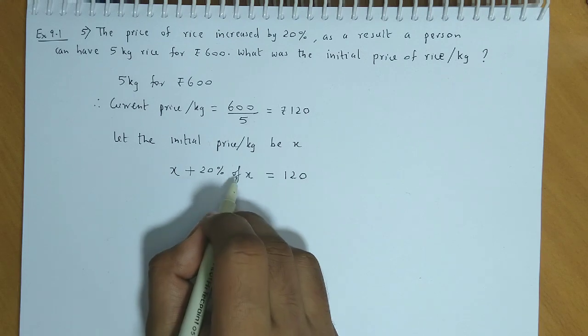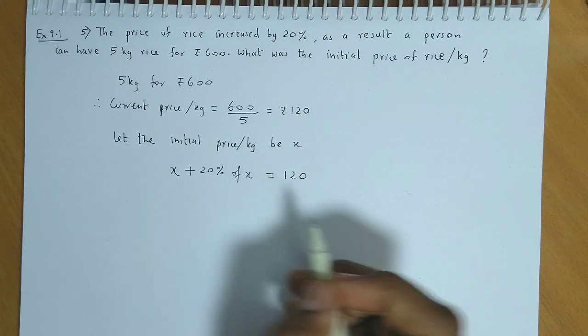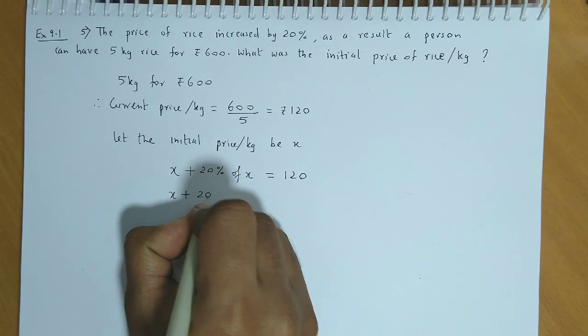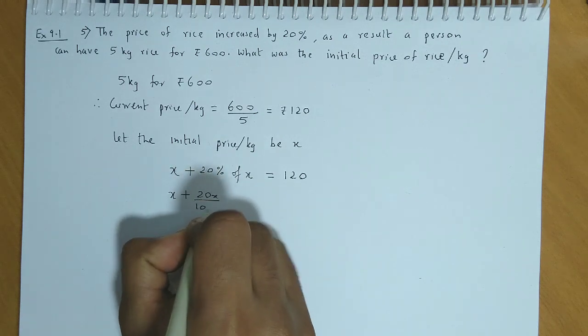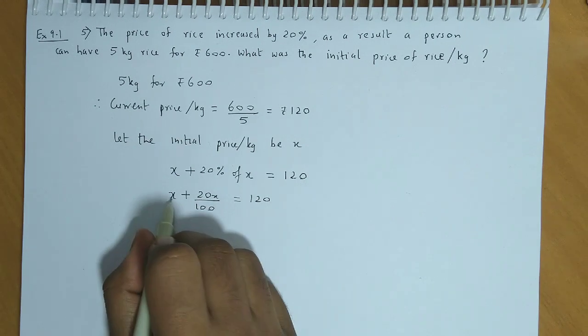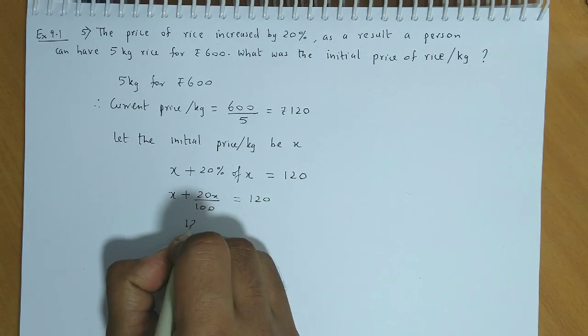The increment after the price per kg is 120. So if we simplify this, we have x plus 20x upon 100 is equal to 120. So 100x plus 20x, that will become 120x upon 100 is equal to 120.